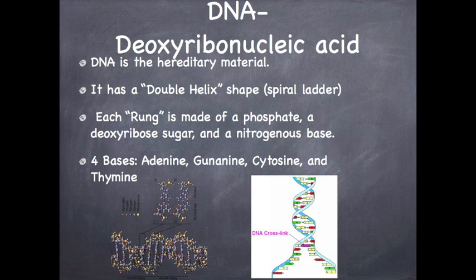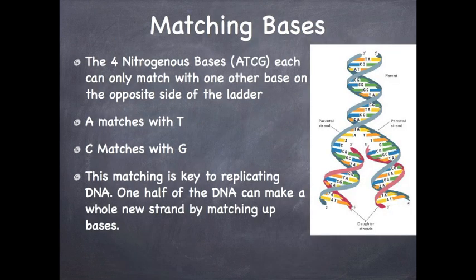Each rung of that ladder — meaning each step — is made of a phosphate and a deoxyribose sugar on the side, and the actual step itself is made of a nitrogenous base. The four different nitrogenous bases are adenine, guanine, cytosine, and thymine.